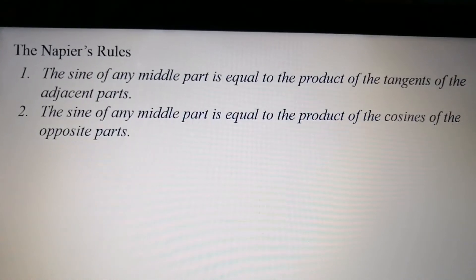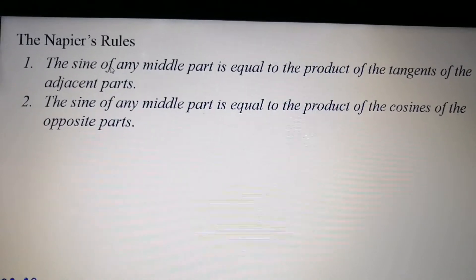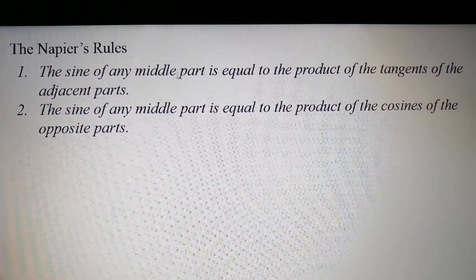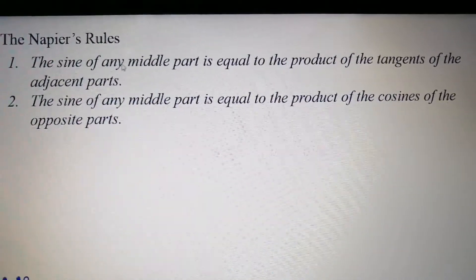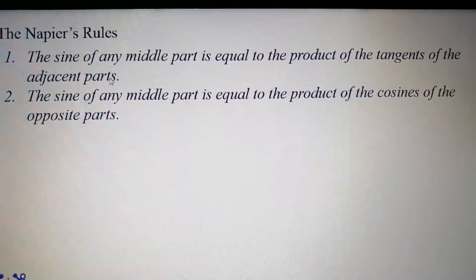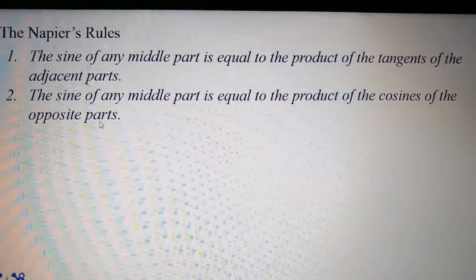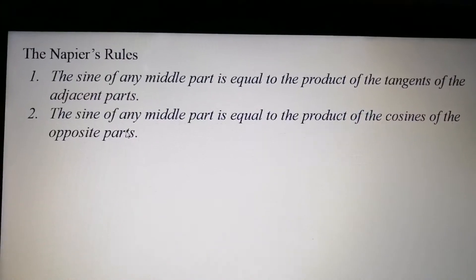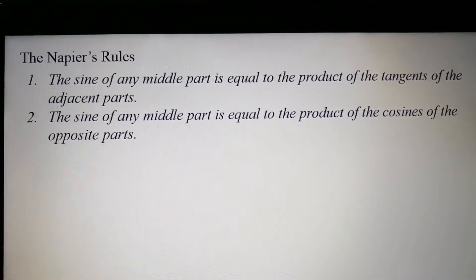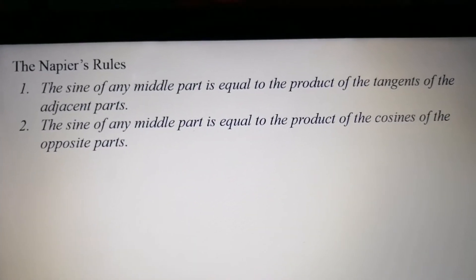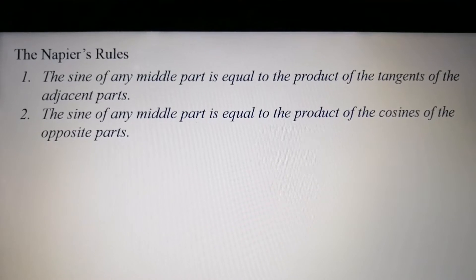There are some words here which we have to be familiar with. First, we have to consider what is meant by middle part, next by adjacent parts, and also what is meant by opposite parts. To do that, we have to learn how to make what I call a Napier Circle — that is the next thing we have to identify before we proceed.